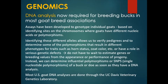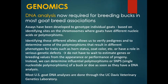Identifying these different alleles allows us to verify pedigrees and to determine some of the polymorphisms that result in different phenotypes for traits such as horn status, coat color, etc., or that have a role in a serious genetic defect. We don't have to wait to estimate genes or breeding values from the performance of progeny. Instead, we can determine these influential polymorphisms or SNPs — single nucleotide polymorphisms — of a buck or doe as soon as they have a DNA analysis.